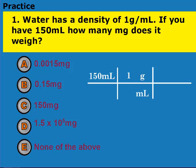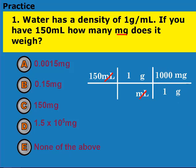Since I have my milliliters canceling out, but I want milligrams, I need to put grams on the bottom so it'll cancel, and finally milligrams on top. From our previous lessons, we know that the 1 is going to go with the larger unit, which is grams in this case. And there's 1,000 milligrams, or 10 to the third milligrams in a gram. So multiplying across, we get 1.5 times 10 to the fifth milligrams.